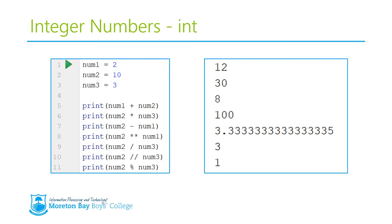So here we have the results for using that code. So, num1 plus num2, which is basically 2 plus 10, will return 12. Num2 multiplied by num3, which is 10 times 3, will equal 30. Num2 minus num1, so 10 minus 2, will equal 8. Num2 to the power of 2, so 10 squared, will give you 100.